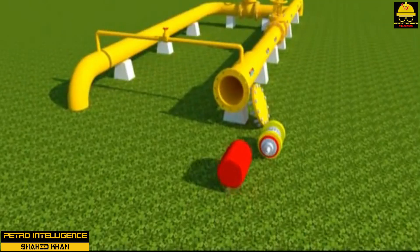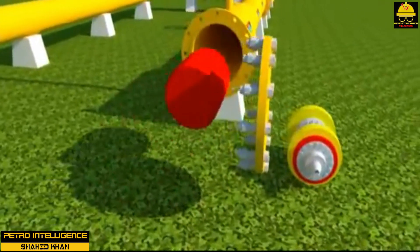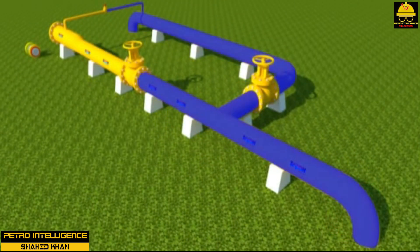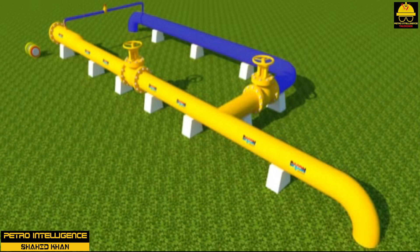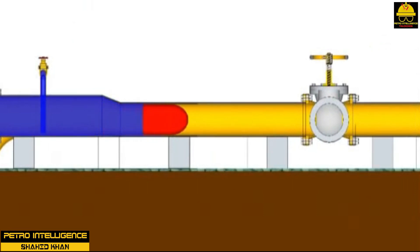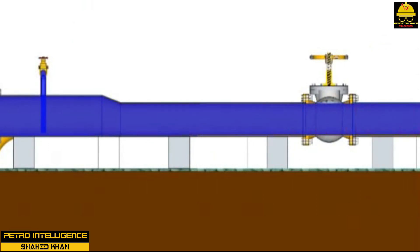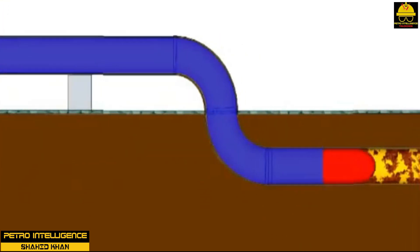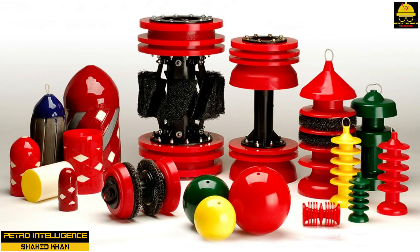Technicians use specialized equipment to clean residues out of pipelines. The basic components used in this procedure include a pig launcher, pig, and pig trap. The pig launcher utilizes fluid pressure to launch a projectile called a pig through the pipe. A pig trap, designed to catch the dirty pig, is placed at the end of the pipe. This picture illustrates the different types of pigs utilized in this procedure.